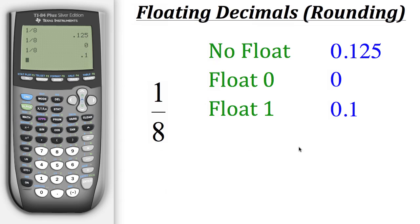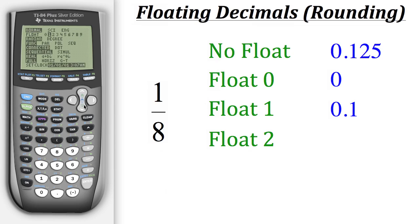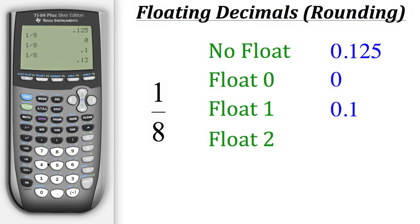That makes sense because if we round 0.125 to only one decimal, we're left with just 0.1. Now let's look at two decimal places. We'll go back to mode and change our float to two. When we do one divided by eight, it rounds to two decimal places, giving us a result of 0.13.